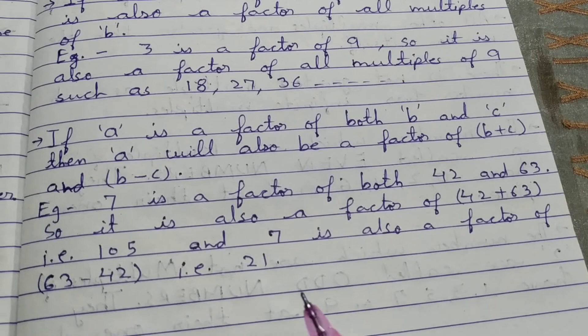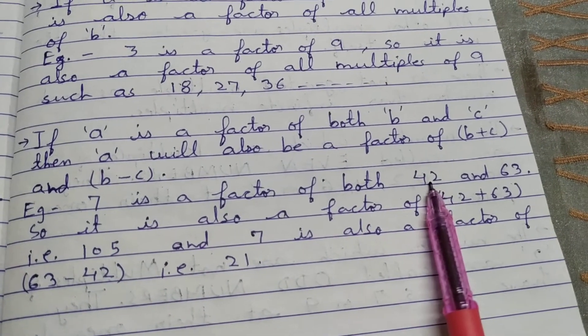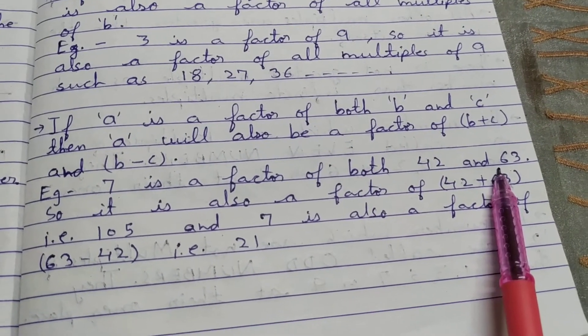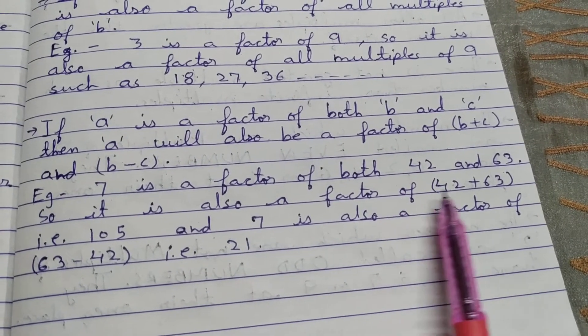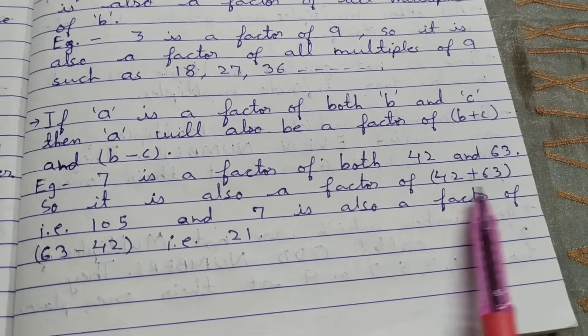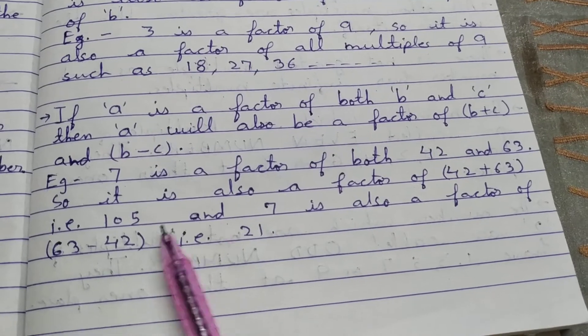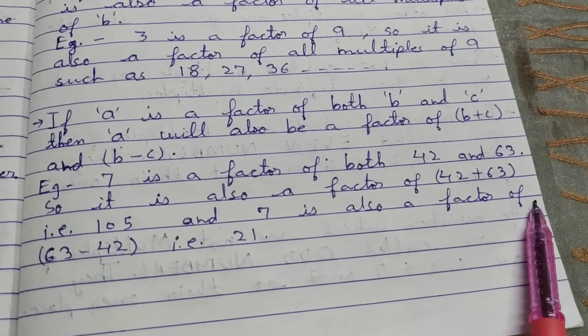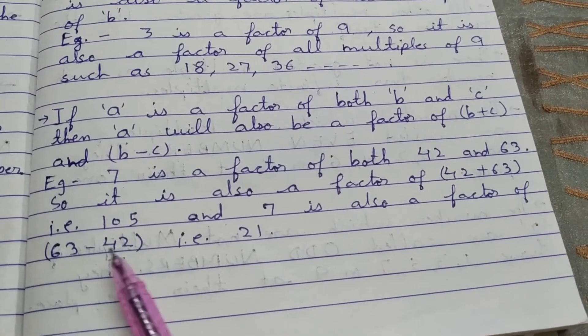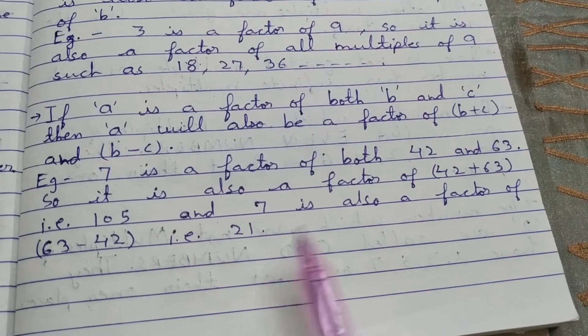For example, 7 is a factor of both 42 and 63, so it is also a factor of their sum, 42+63, which is 105. And 7 is also a factor of their difference, 63-42, which is 21.